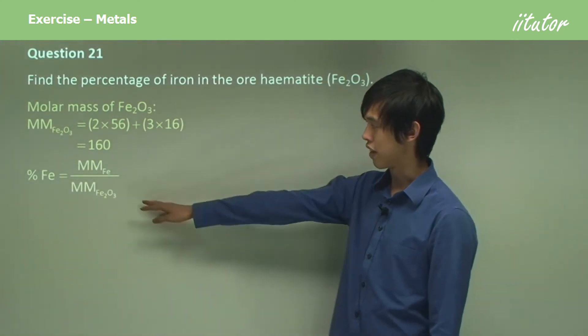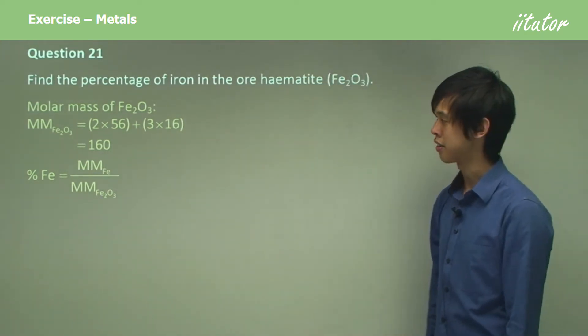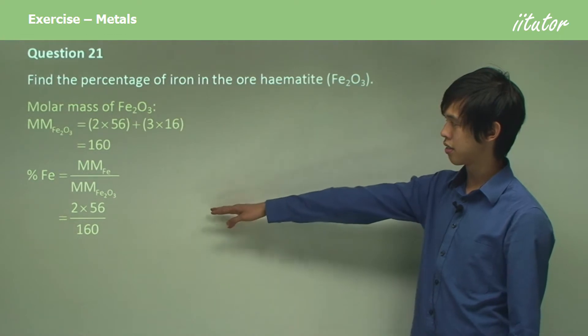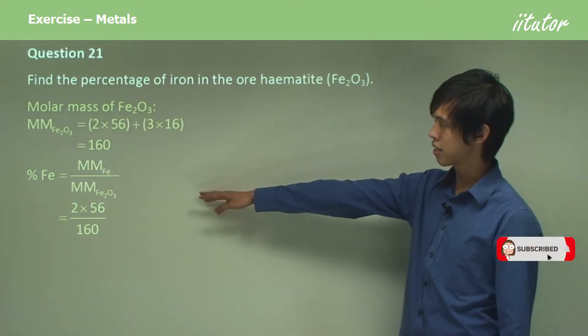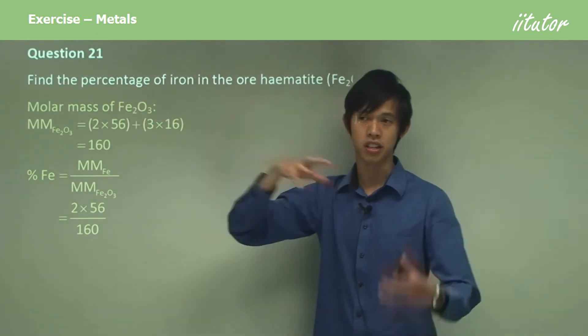Now the percentage of iron is simply the molar mass of iron divided by the molar mass of Fe2O3, which is 2 times 56, because there's two iron atoms for every one Fe2O3 unit.